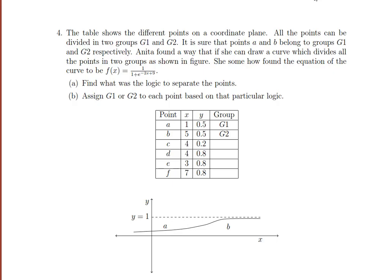Our fourth question is about categorizing some points into two groups — G1 and G2. There are five points A, B, C, D, E, F given. Two points are labeled as G1 and G2, and based on this logic we have to find where C, D, E, F will lie — either in G1 or in G2. Anita has found a way to do this.